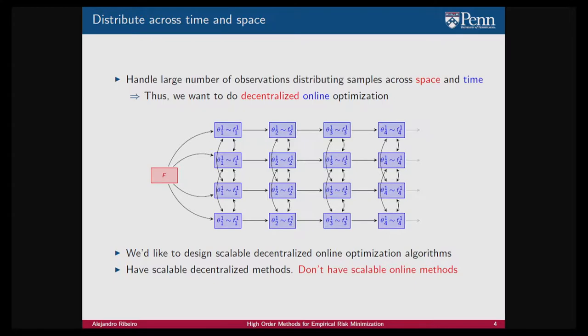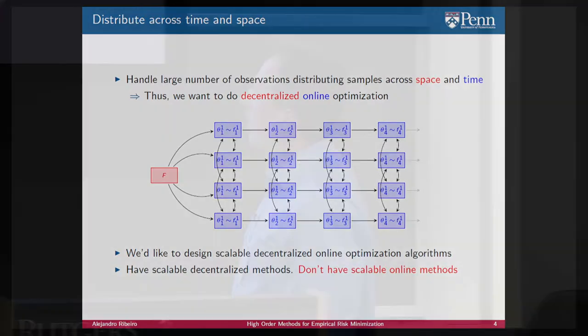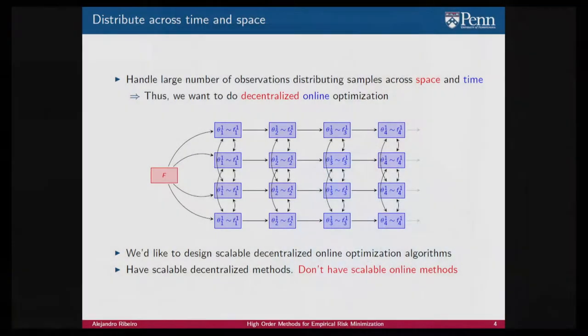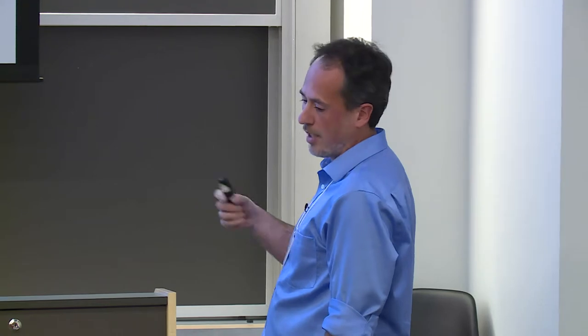When n is very large, we cannot handle that in a single computer or a single iteration. We distribute the problem across space and time. We consider a bunch of servers and a bunch of points in time, and at each server and each point in time, we process a different set of functions — f_{1,1} living on server 1 at time 1, f_{1,2} on server 1 at time 2, f_{3,1} on server 3 at time 1, and so on.